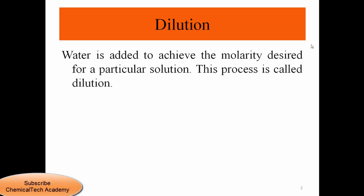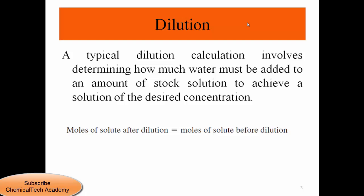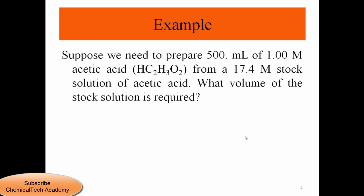For example, if the solvent is water, water is added to achieve a desired molarity for a particular solution — this process is called dilution. Dilution calculations involve determining how much water must be added to a stock solution to achieve a solution of desired concentration. When we do dilution, the number of moles of solute does not change; only the volume of solvent or solution changes. So the number of moles of solute after dilution equals the number of moles before dilution.